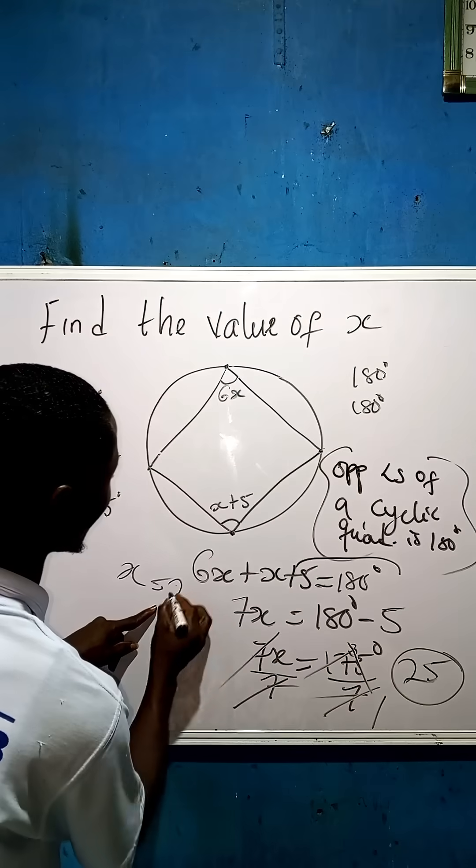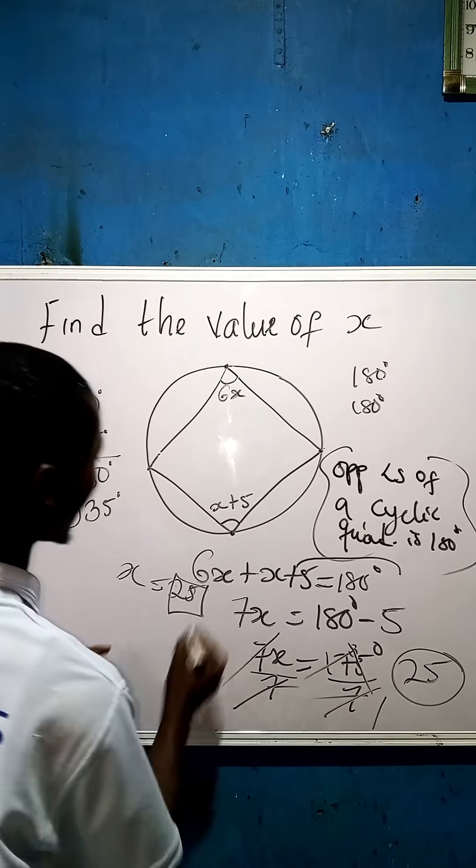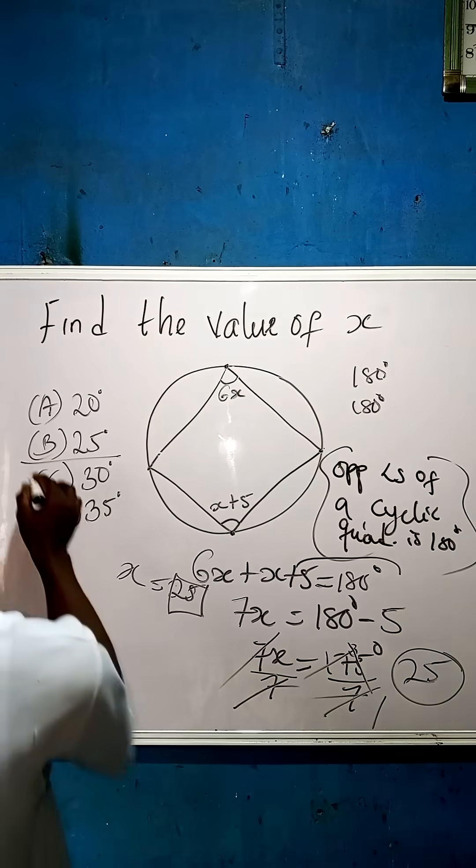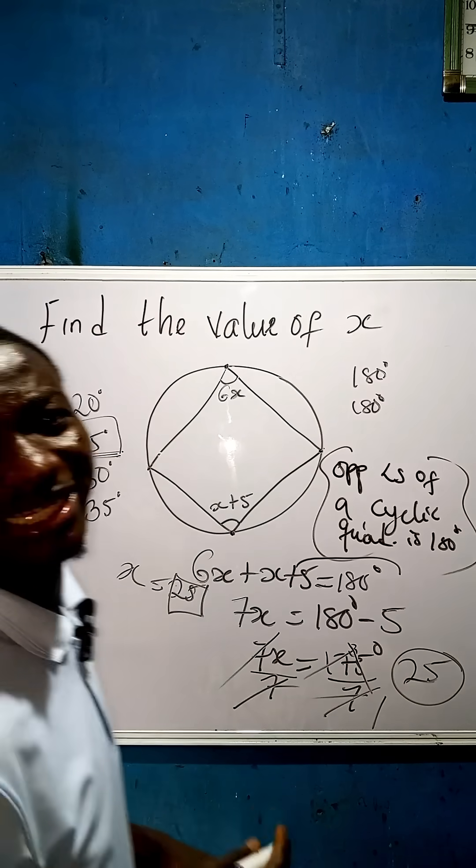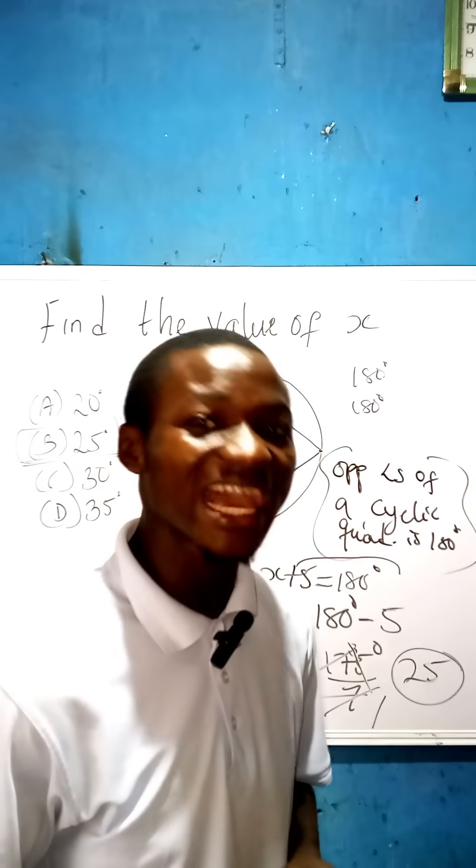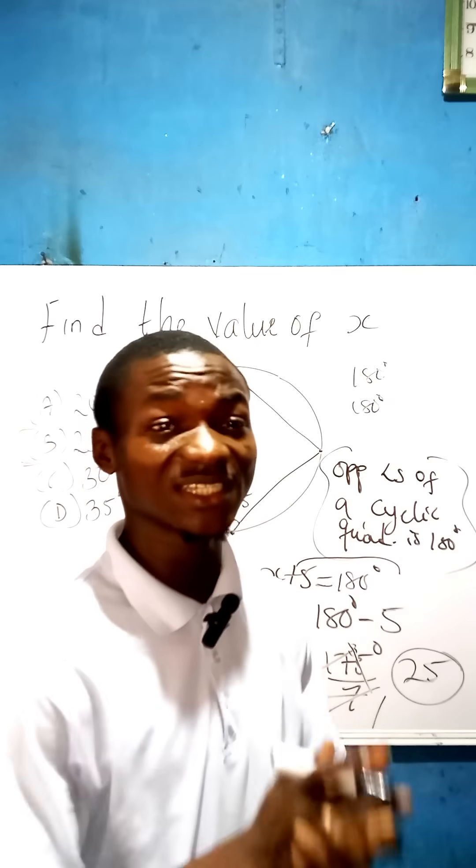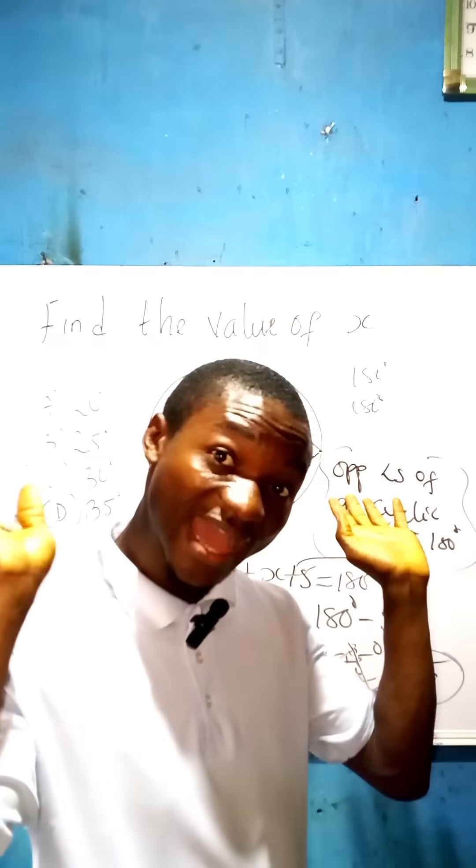Now this is our value for x, which is 25. Can we check and see? Yes, you have marked it already. So our answer is B. Please share this video and like and comment. Share it further. Thank you and God bless you. Bye-bye.